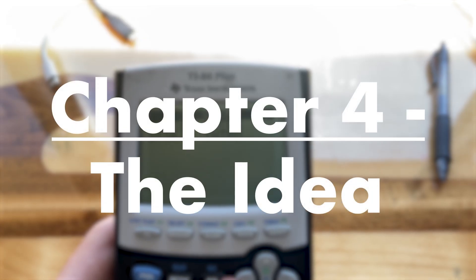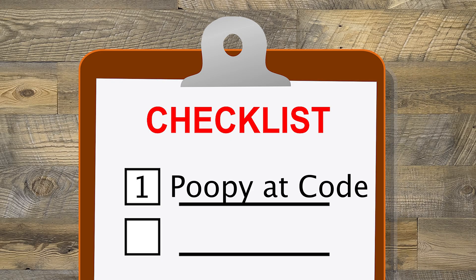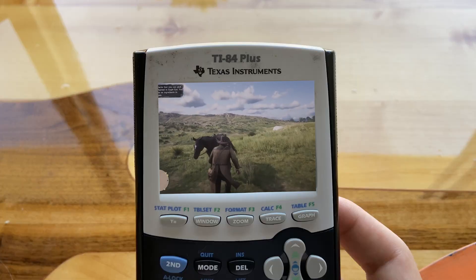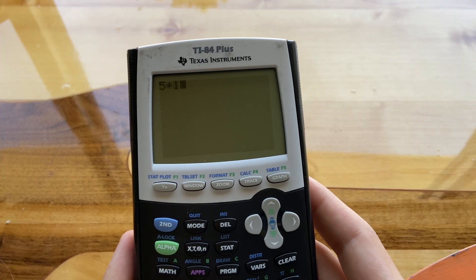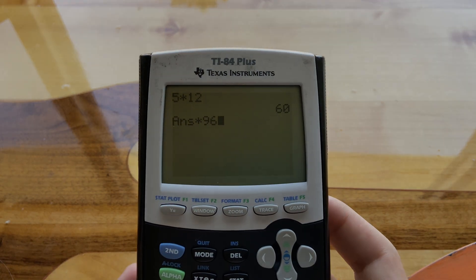I need to come up with an idea. I need it to be simple for two reasons. Number one, because I'm a crappy programmer in a language that I don't like at all. And number two, it's a calculator. I'm not going to make the next Red Dead Redemption on it. Its screen can literally only display two colors, on and off. Well, let's find an idea.